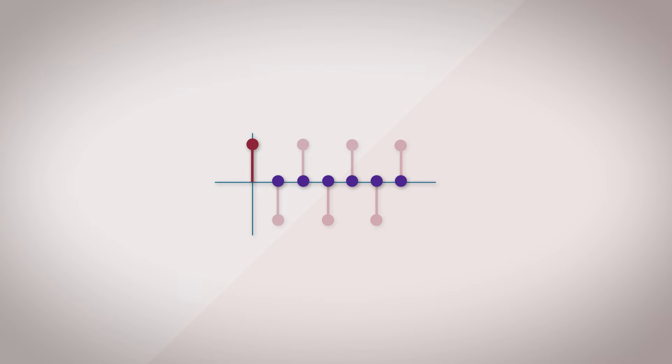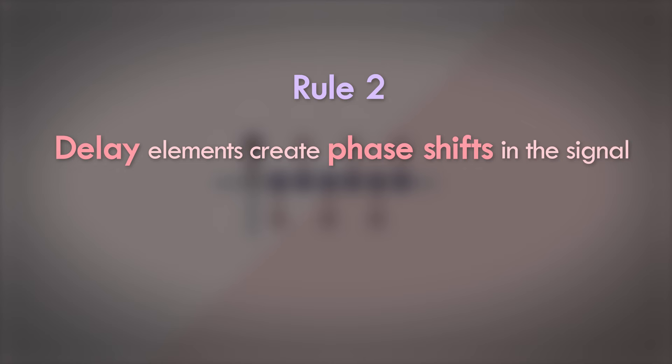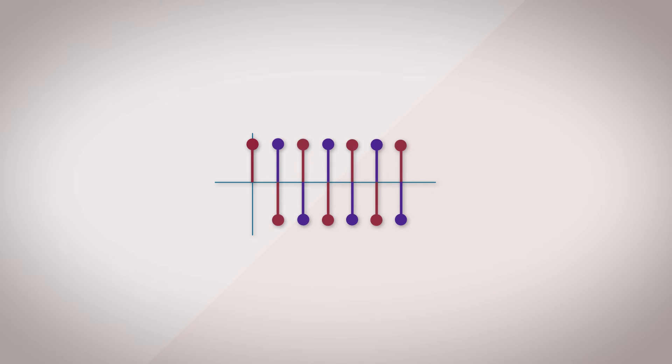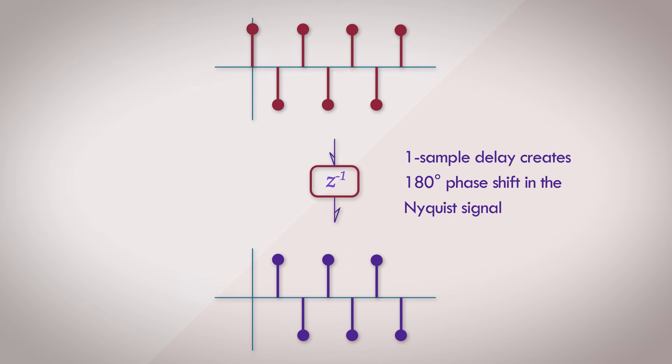This leads us to the next rule. Delay elements create phase shifts in the signal. The amount of phase shift depends on the amount of delay as well as the frequency of the input signal. In the case of the Nyquist signal, the one sample delay is exactly enough to cancel out the original signal when they are both added together in equal ratios. But what about other frequencies?